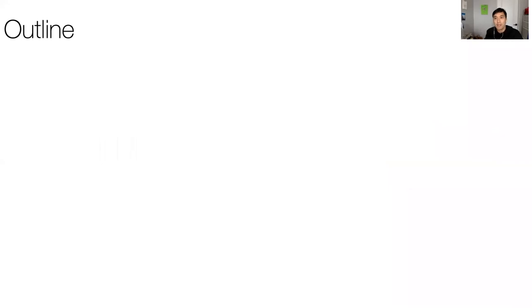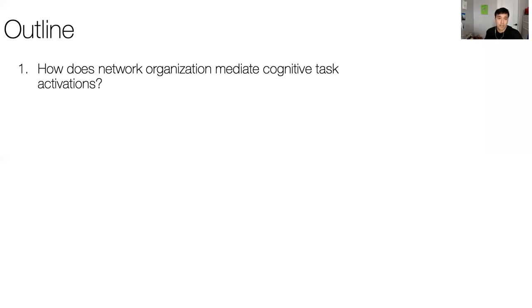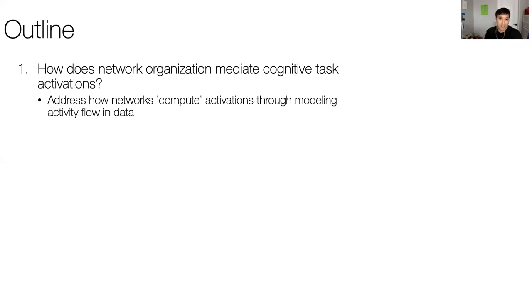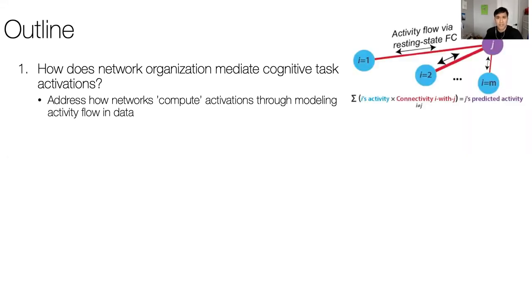The two main points I'd like to make today: first, addressing how network organization mediates the production of cognitive task activations. We can look at how networks compute activations through modeling activity flow in data. The general intuition is that we can predict the activity level of a region J by estimating the amount of activity flow from other regions, mediated by connectivity weights—using resting-state functional connectivity, though in principle any connectivity model should work.